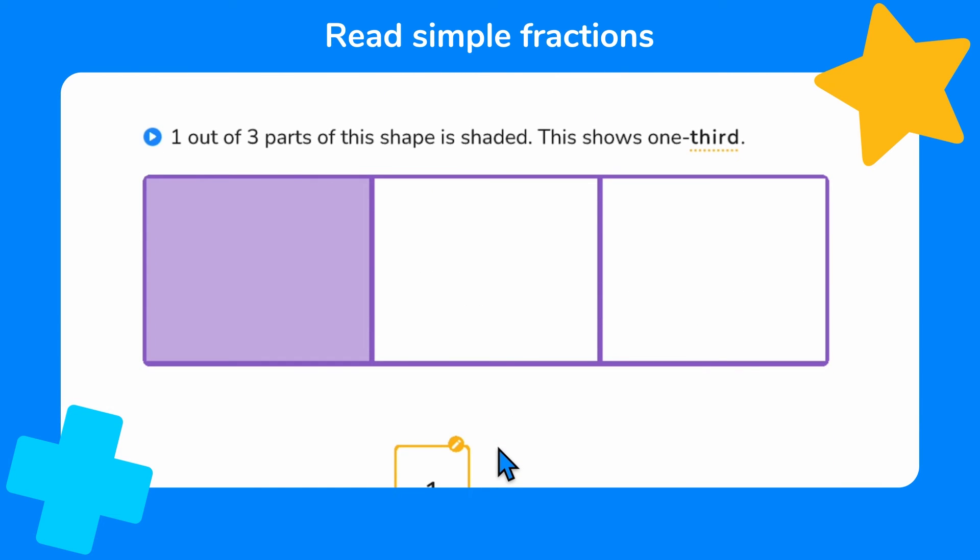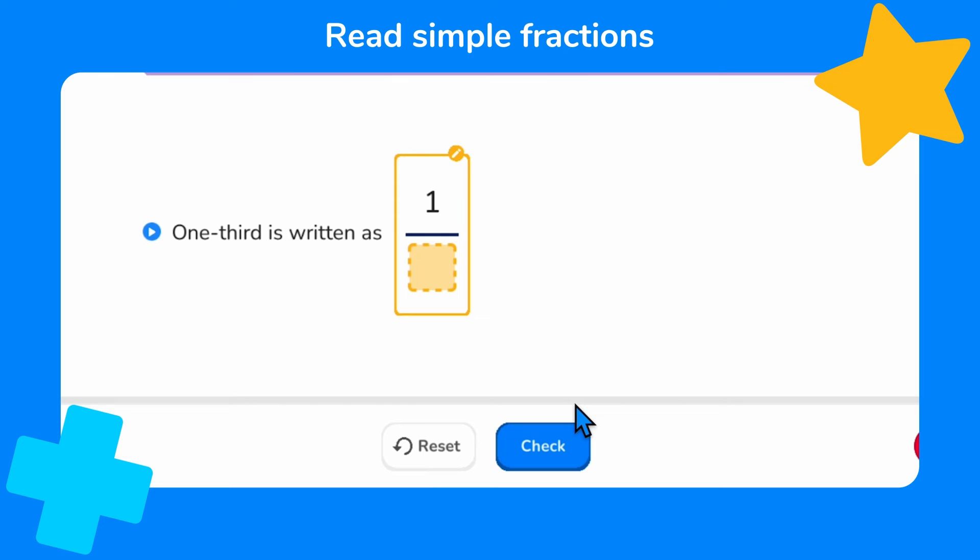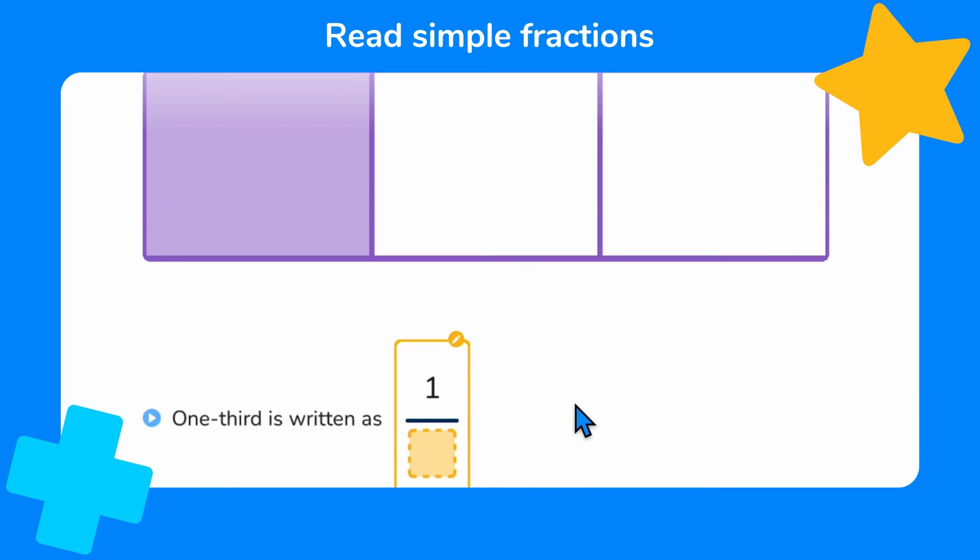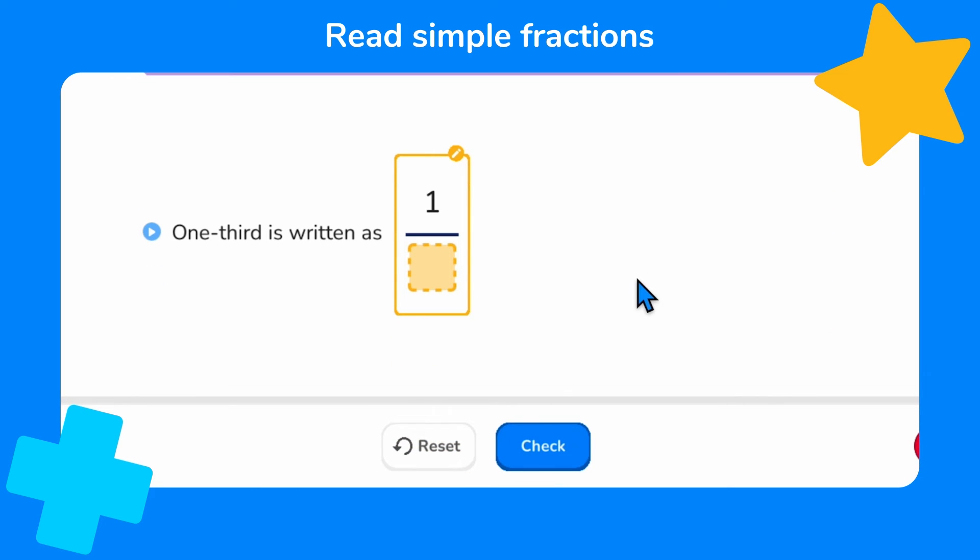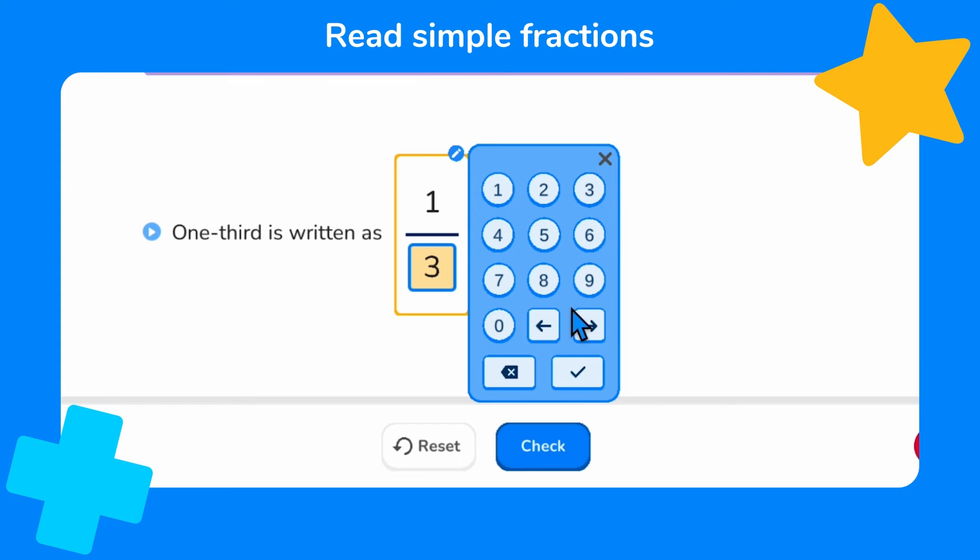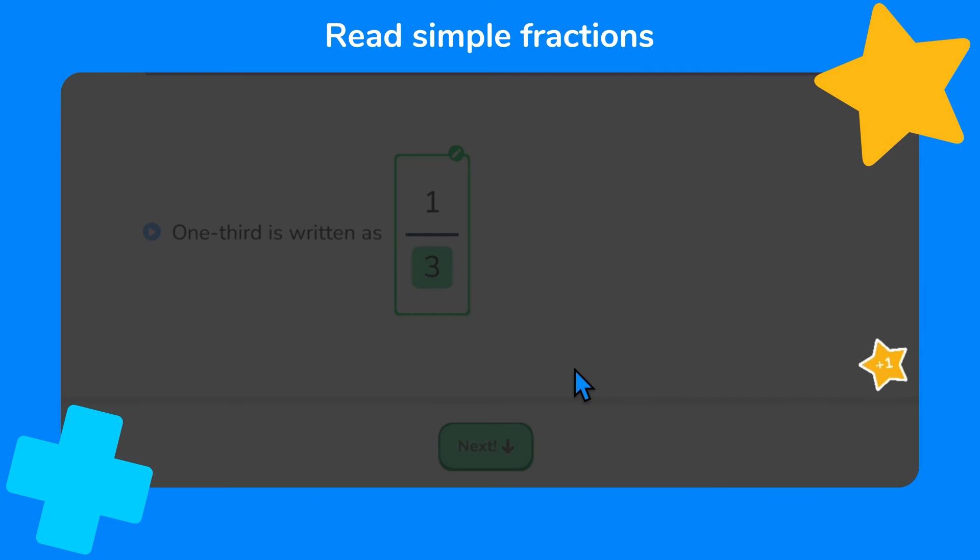One out of three parts of this shape have been shaded. This shows one third. Again, we are asked to complete the fraction to show the shaded part. One part has been shaded and there are one, two, three parts altogether, so we know that one third is written as one over three. We're doing brilliantly so far.